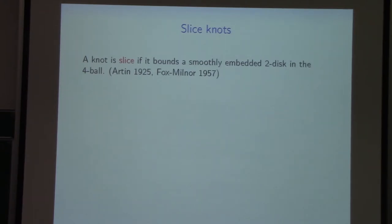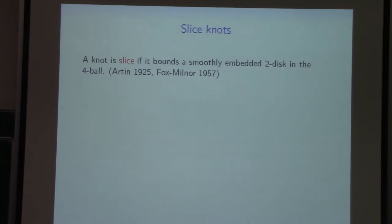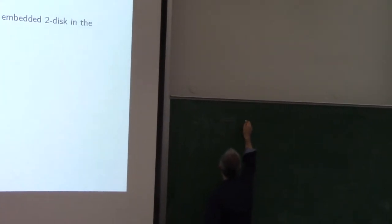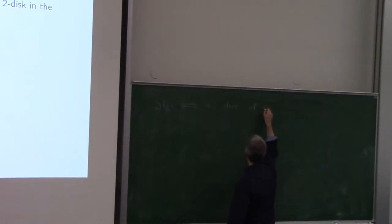A knot is slice — this is a four-dimensional topology definition, although what we'll see is on the borderline between three and four-dimensional topology. A slice knot is a knot which bounds a smoothly embedded two-disk in the four-ball. These were discussed in the paper of our team in 1925, and modern research really started in 1957 with the famous paper of Fox and Milner.